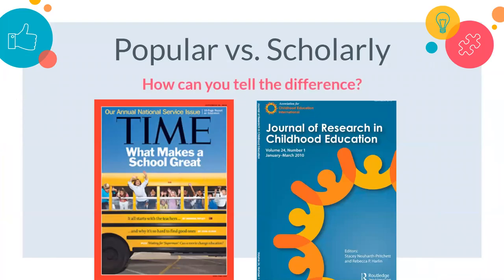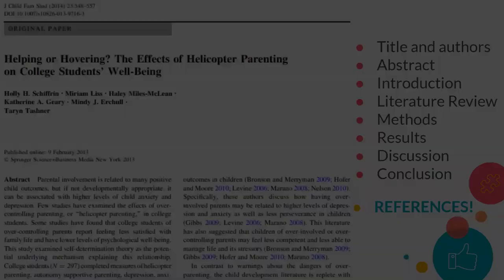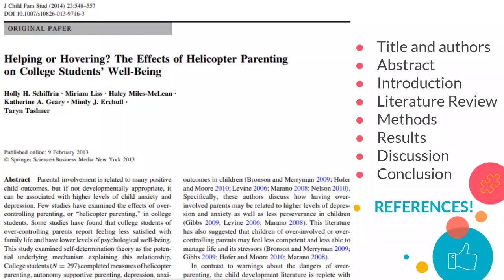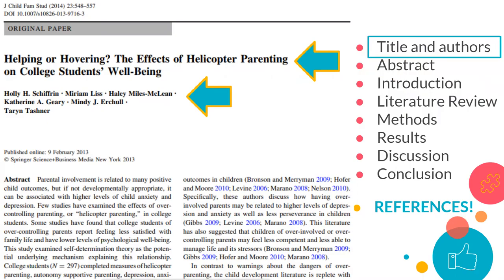So now we know that the databases are going to hold really good scholarly material, but what does that really look like? What's the difference between scholarly and popular articles? We have two examples here — can you tell which is which? The magazine on the left, with its flashy cover, is a popular source. You're probably familiar with articles in popular magazines, but can you identify a scholarly one? Let's take a look at the parts of a peer-reviewed article so that you can easily identify them in your own research.